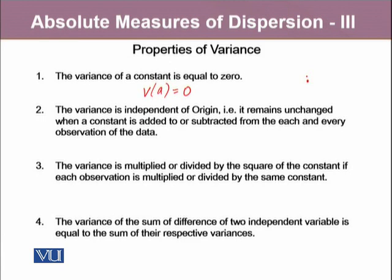The second property talks about that the variance is independent of origin, which means that if we add a value into a variable, it won't have any effect on the variance of the data.